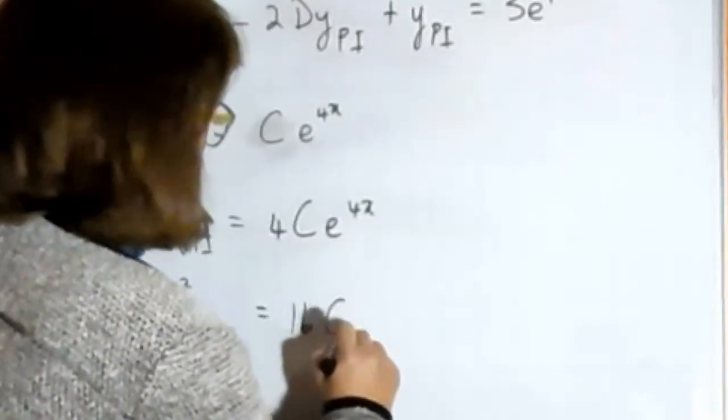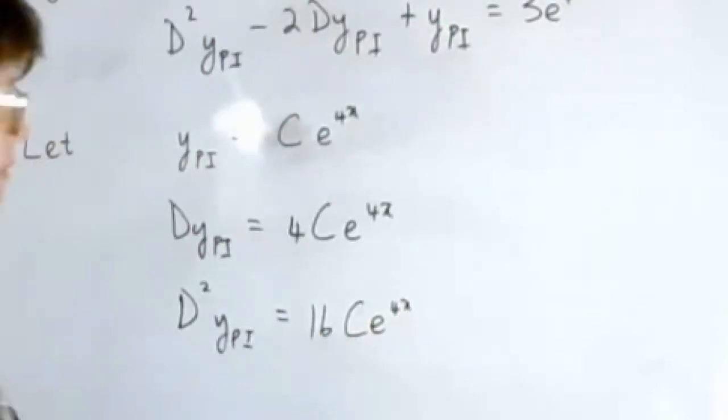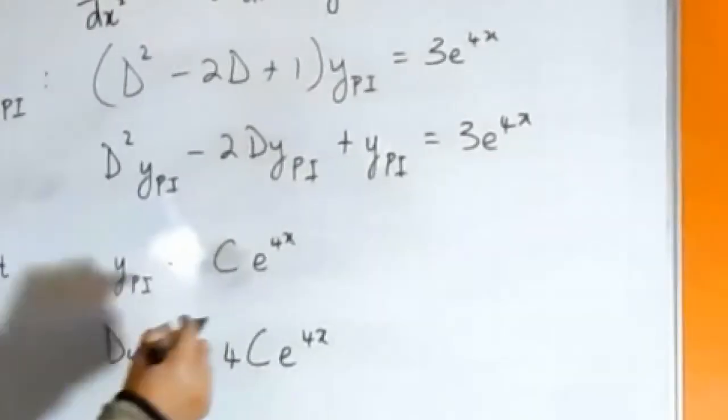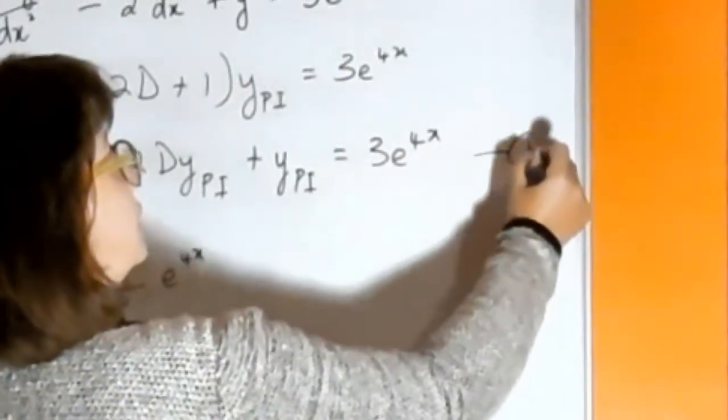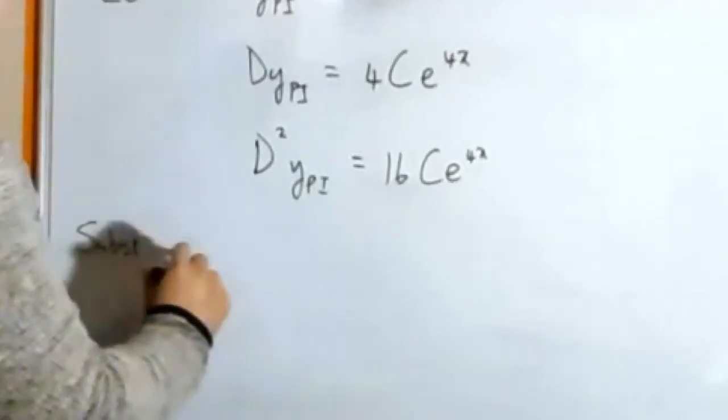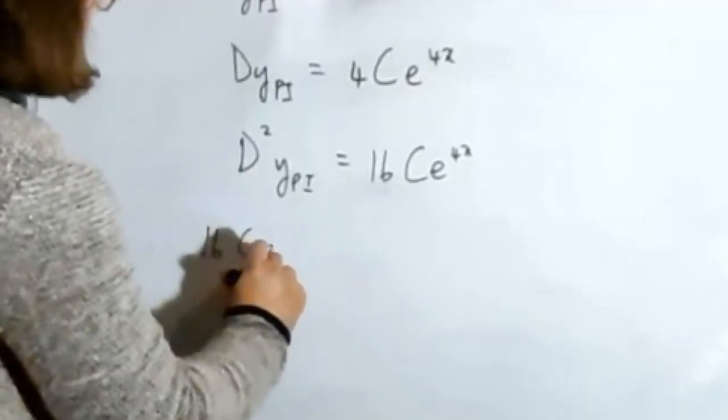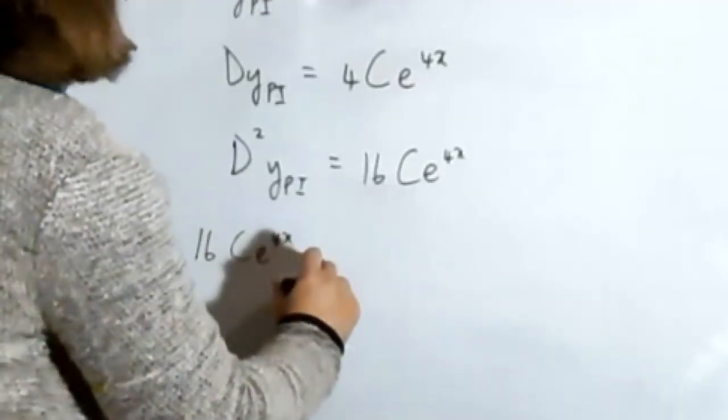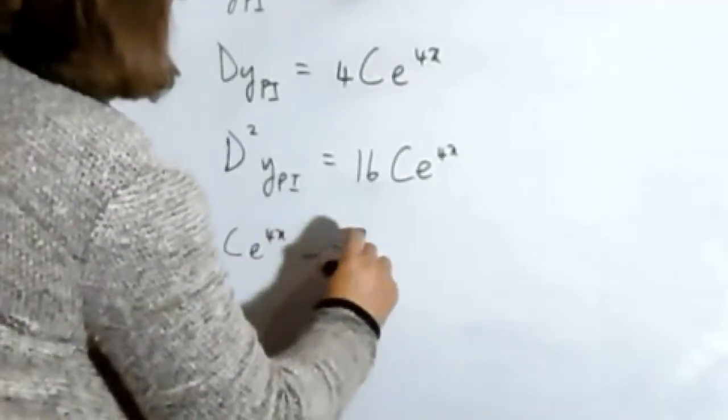Right, and then we substitute into this equation here and we get 16ce to the 4x minus 2 times...